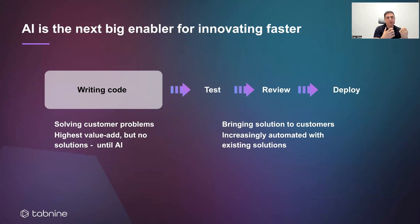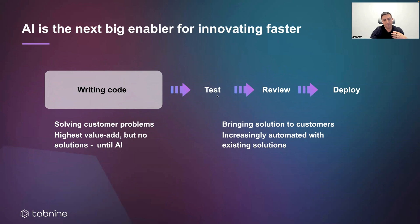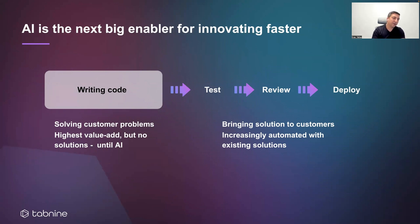Even if we take a step back, there has been a lot of investment in the delivery part of the pipeline over the years — a lot of work on how do we bring the solution faster to customers, how do we accelerate testing, accelerate the process of review, accelerate the process of deployment. These have seen a nice amount of automation without involvement of AI. In contrast, on the part of writing the code itself — which is where we as engineers solve the actual customer problems — there has not been much innovation in the last 30 years or so since the introduction of IntelliSense.